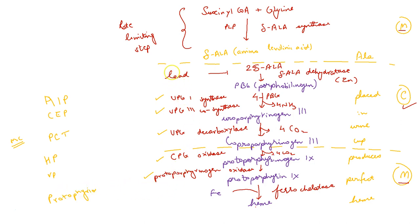You have to remember that lead poisoning also affects heme synthesis, because lead inhibits delta-ALA dehydratase — as it is a zinc-containing enzyme — and also ferrochelatase, because it competes with iron.